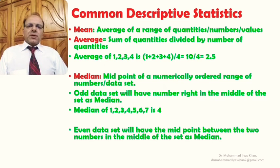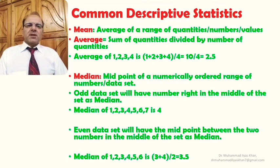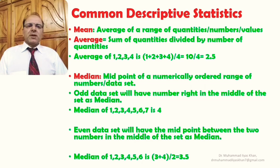We could also have an even data set, in which case the midpoint between the two middle numbers serves as the median. For example, in the set 1, 2, 3, 4, 5, 6 — an even number of values — the two middle numbers are 3 and 4. We add them and divide by 2, giving us 3.5, which is the median of this set.